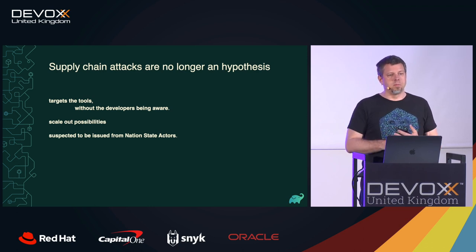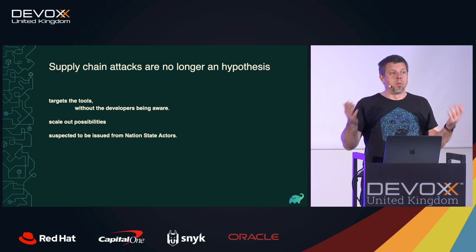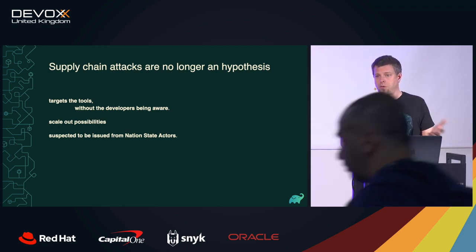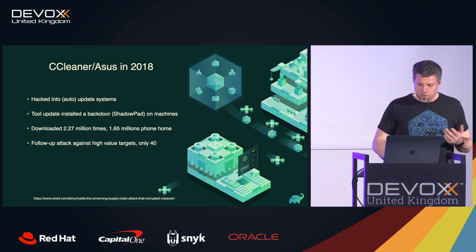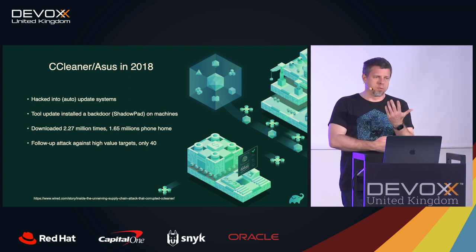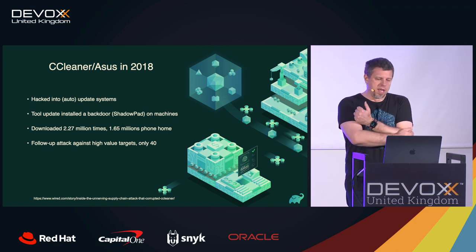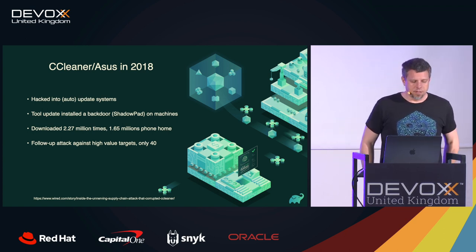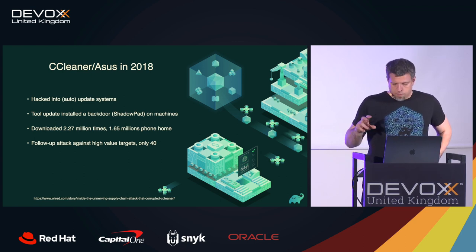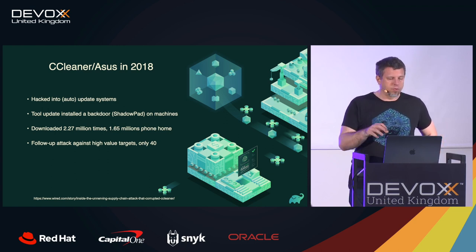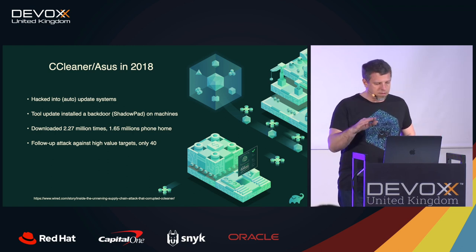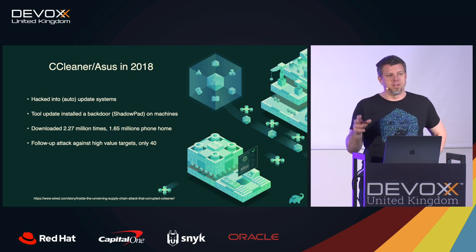It's a difficult attack to pull off, so most of them so far have been tied to some form of nation-state actor. But the fact that you develop software means that through your supply chain you could be a victim. In 2018 there was the CCleaner and Asus fiasco, where malicious actors hacked into the auto-update systems, managed to install a backdoor in the software, and it got distributed — estimates are around 2.27 million downloads of the infected software.